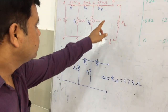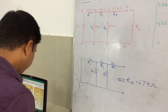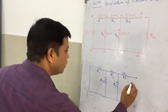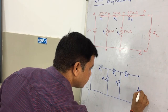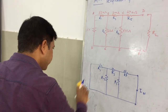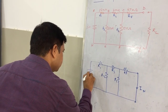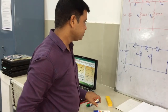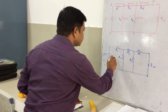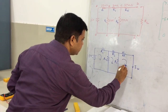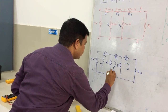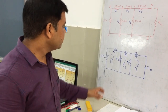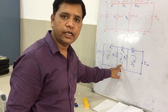To calculate the Norton equivalent current through the terminals, we short the terminals. We replace the energy source with the 5V supply. In this particular circuit we have three loops — loop number 1, loop number 2, and loop number 3 — and we consider currents I1, I2, and I3 flowing in these respective loops. By the application of mesh analysis, we can easily find out currents I1, I2, and I3.